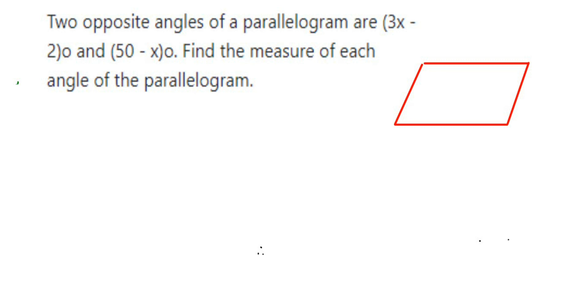Hey everyone, here's a question about parallelograms. The question is: two opposite angles of a parallelogram are (3x - 2)° and (50 - x)°. Find the measure of each angle of the parallelogram.